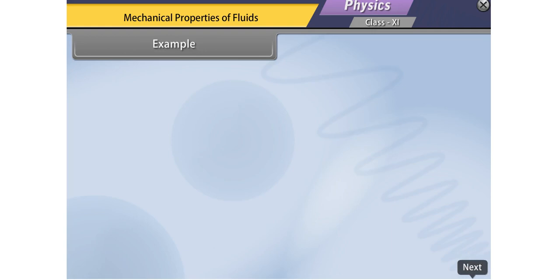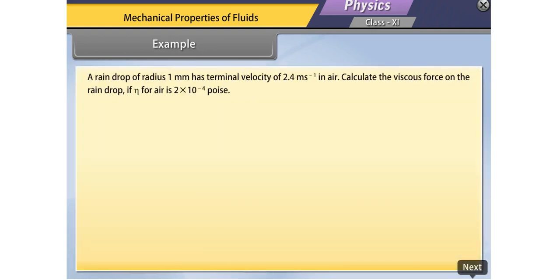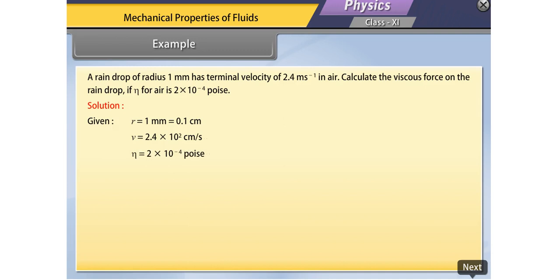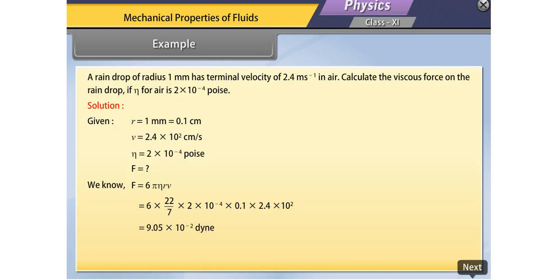Example on Stokes' law: A raindrop of radius 1 mm has a terminal velocity of 2.4 m/s in air. Calculate the viscous force on the raindrop, given η for air = 2 × 10⁻⁴ poise. Given: R = 1 mm = 0.1 cm, v = 2.4 × 10² cm/s, η = 2 × 10⁻⁴ poise. Using F = 6πηrv and substituting the values, we get F = 9.05 × 10⁻² dyne, which equals 0.091 dyne. Hence, the viscous force on the raindrop is 0.091 dyne.